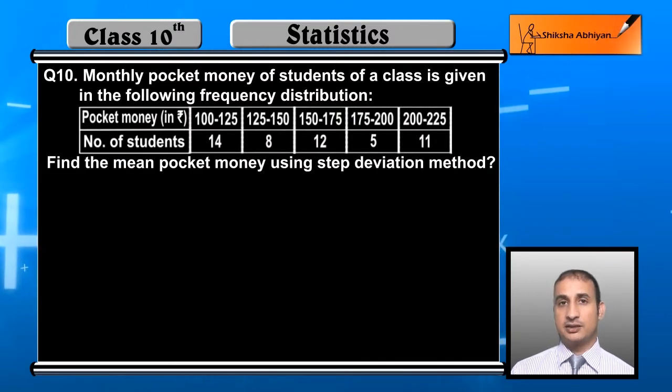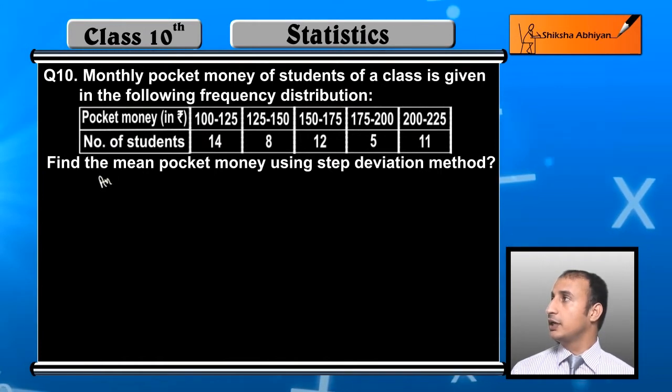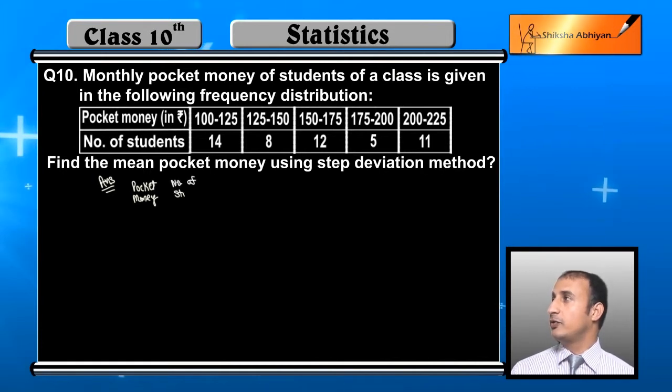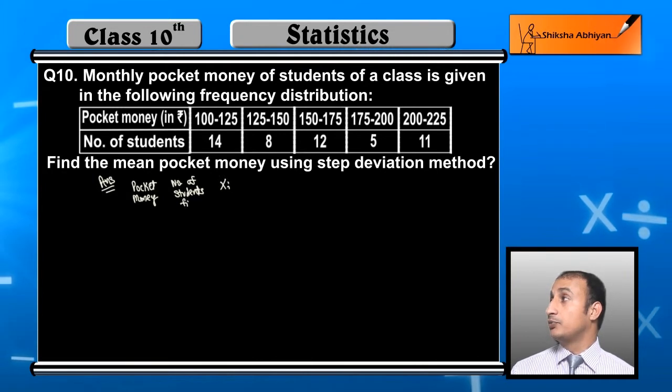For step deviation method, we have to first write the data. We have pocket money and number of students which is the frequency. I will create another column for midpoint values and also the UI which we need to create.